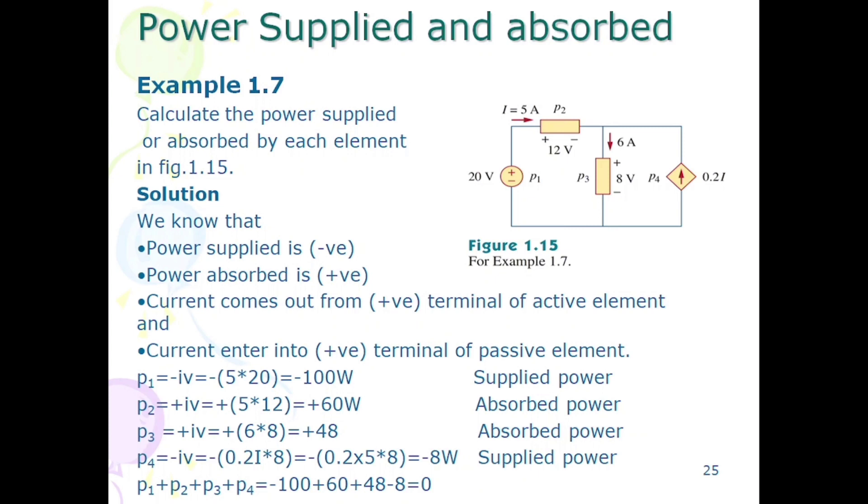Now come to find out the power p1. P1 is the power across 20 volt source. Now it is source and it is supplying power and it is active element, so current is coming out of it, then minus sign for power supply. Value of current is 5, value of voltage is 20, minus 5 into 20 is equal to minus 100 watt.